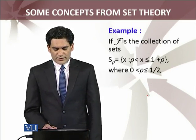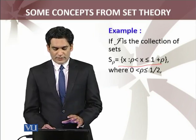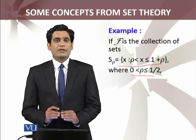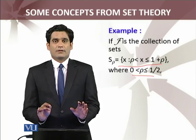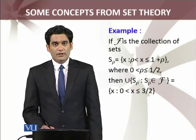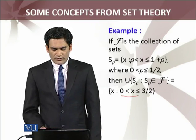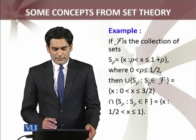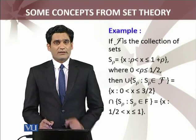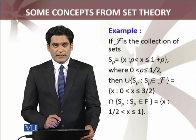If F is the collection of sets defined by this one — अब आपको पता है के ρ (row) between 0 and 1/2 है. 0 और 1/2 के दर्मियान how many real numbers — we have infinitely many real numbers, even an uncountable set. So for each ρ, you have a set. अब इन सब की union — arbitrary collection of sets है जो uncountable है — वो 0 से 3 तक interval बनेगी. Similarly इन सब की intersection वो 1/2 से 1 तक बनेगी, और 1 included है — closed interval, open interval. I hope you understand this terminology.